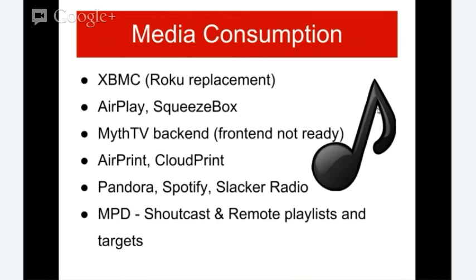For Cloud Print, that is Google's cloud printing service. Some printers do it directly, but you can also turn your Pi into one that does it as well — those who have to leave their PC and Chromebook running all the time just to print from the road can instead set up the Pi and print from your smartphone. Then you have the ability to use Pandora, Spotify, and Slacker Radio. All of these options let you stream from the internet out to your audio outputs. Another option is MPD — Music Player Daemon. You can use it for Shoutcast streams, and control your entire remote playlist from your phone.